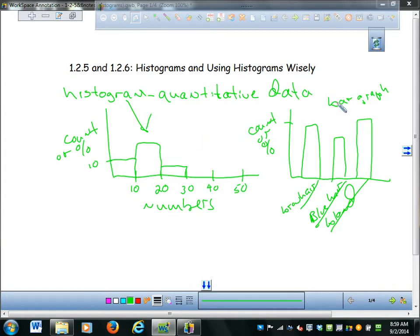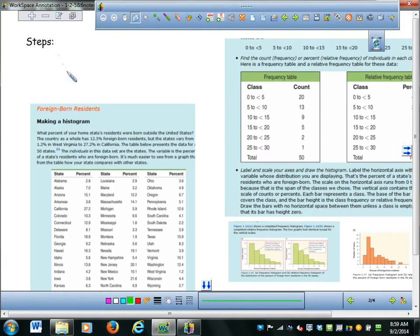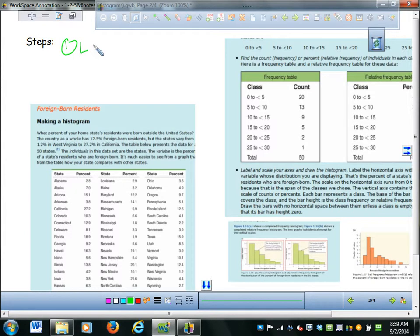So we talked about the difference between a histogram and a bar graph, quantitative variables, categorical variables, and so on. So now this is where I steal from your book. And the steps in making a histogram are to, first you're given a list of data, and then you want to, I would say, one look at the spread. Look at spread and divide into what they call classes.